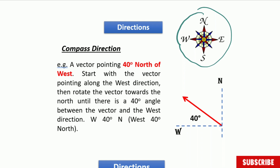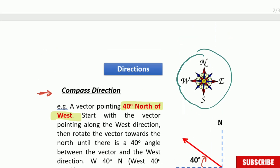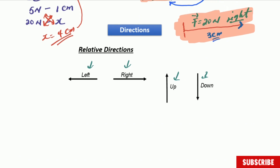For instance, if you have an angle of 40 degrees from west moving towards the north, we say this direction is 40 degrees north of west. This is how to give direction using the compass method. Please do not confuse compass direction with relative direction.